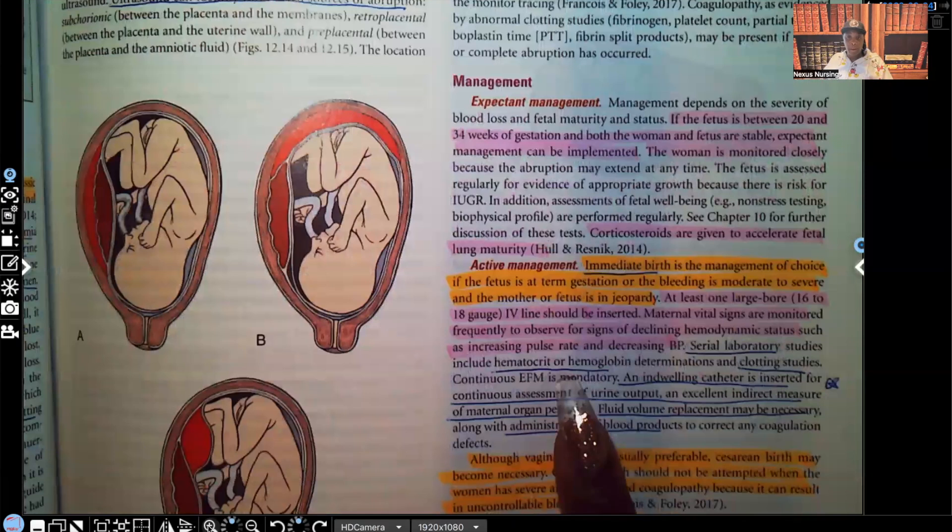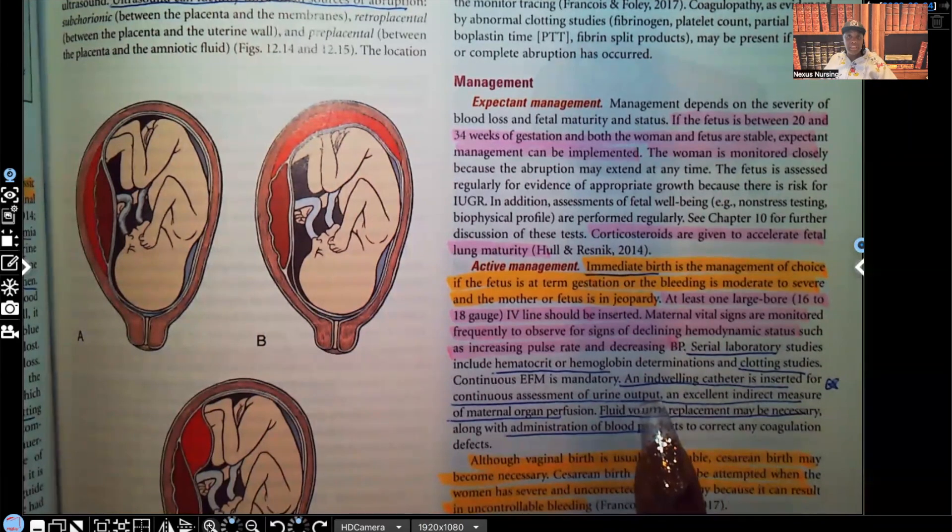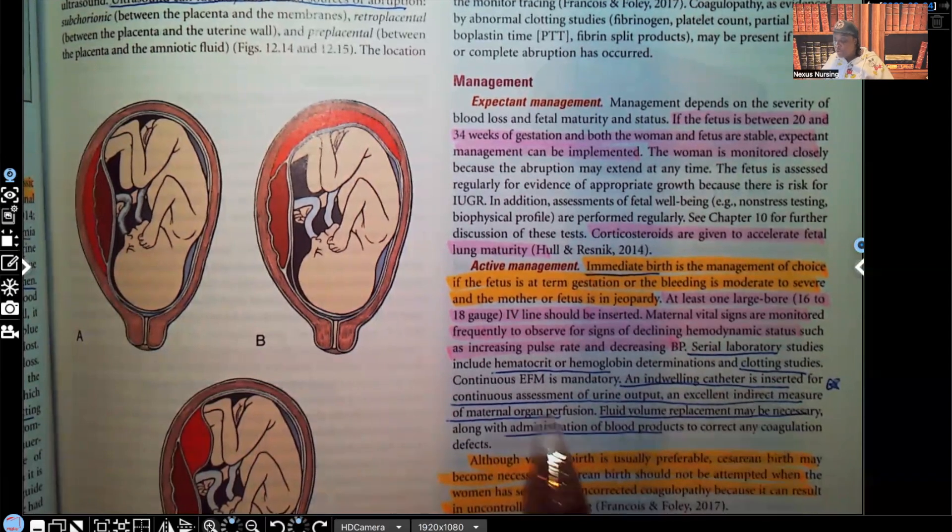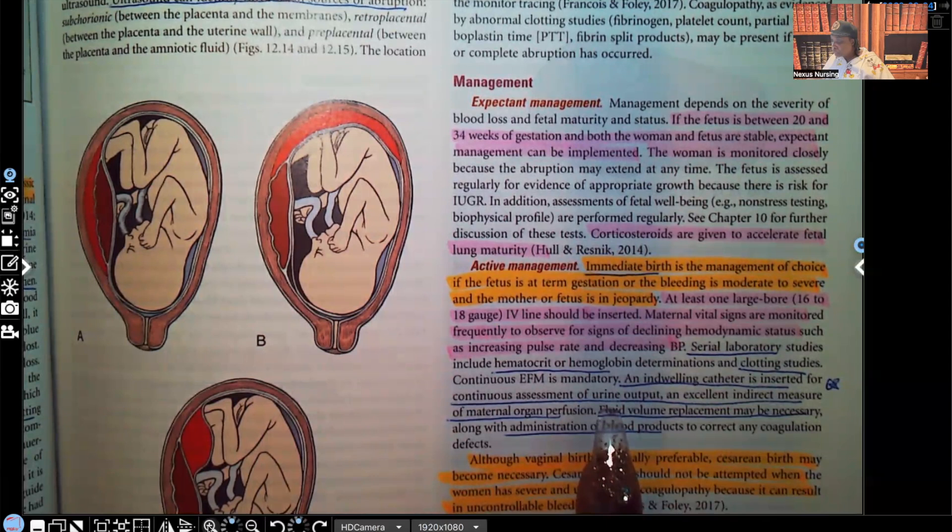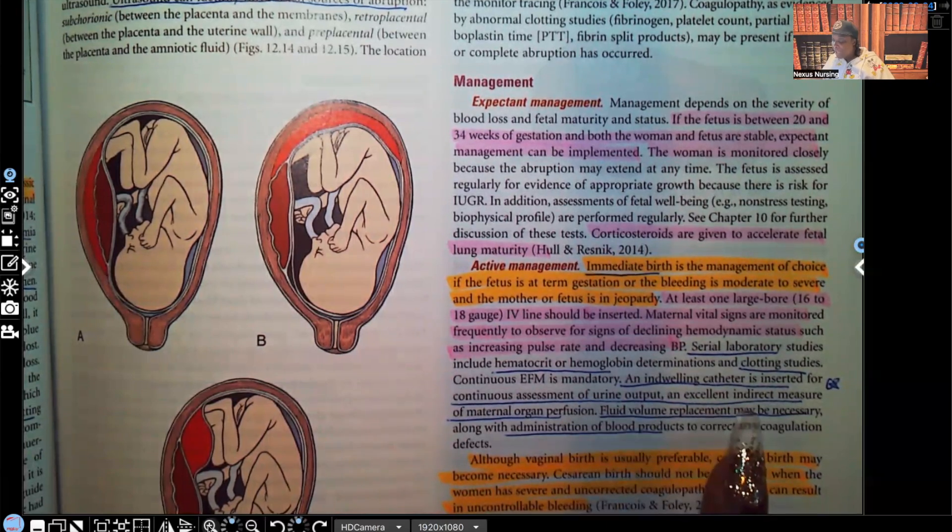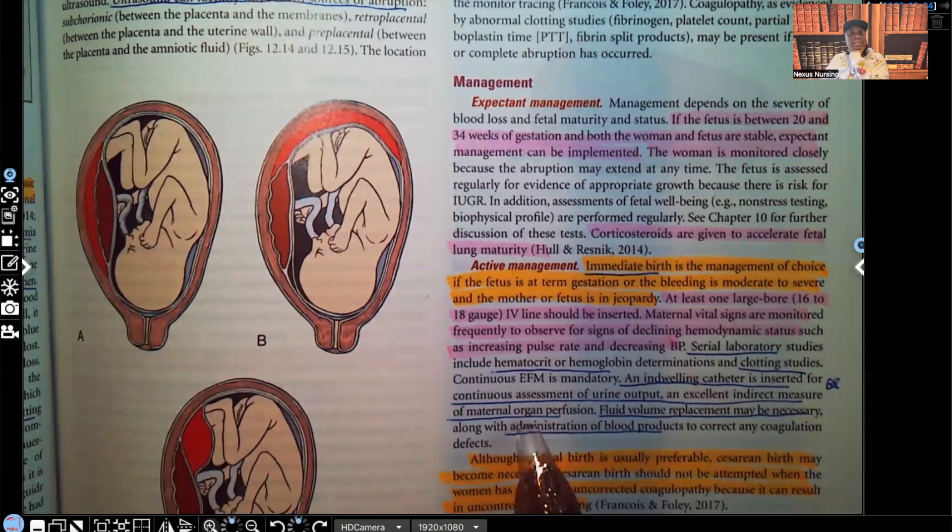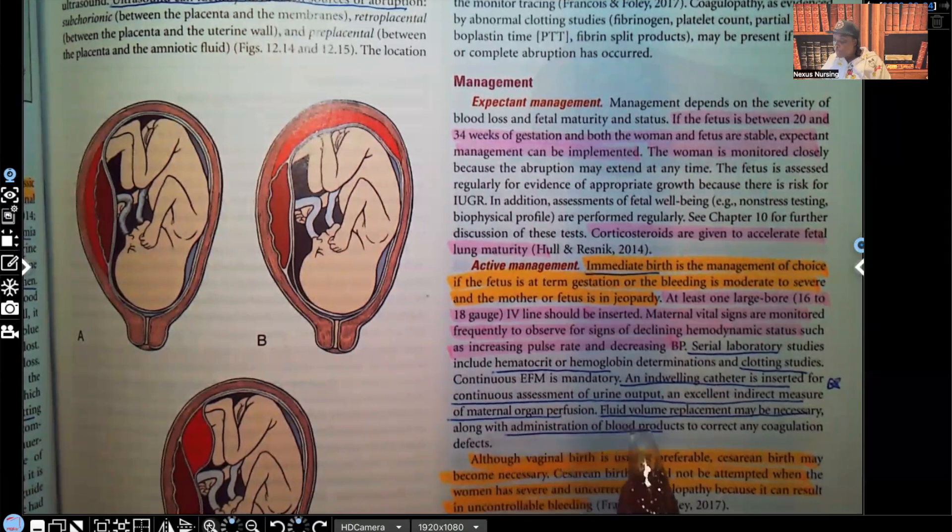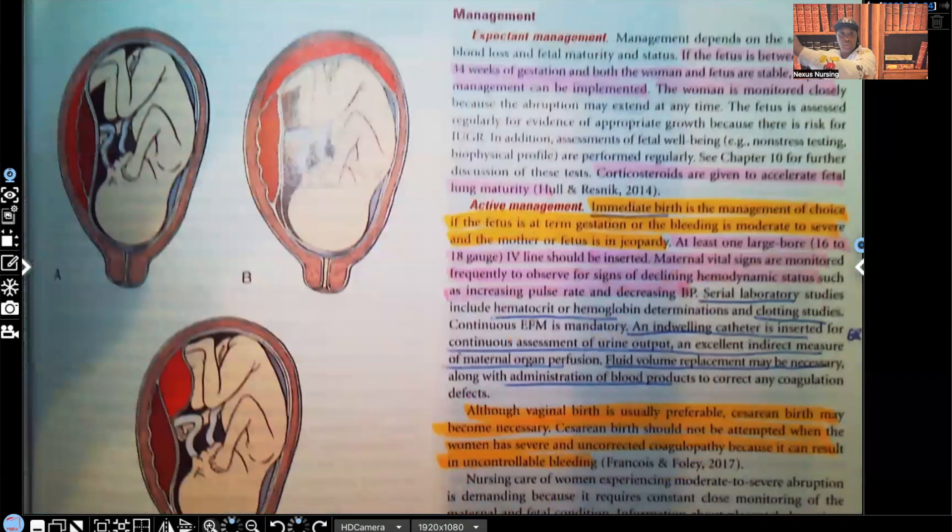Serial lab studies, you're going to be looking at the H&H. You want to make sure it doesn't start dropping. You're going to be looking at the clotting studies because one of the problems is clotting defects and hemorrhage. Indwelling catheter is going to be inserted for continuous assessment of urine output. When the patient is hemorrhaging, they're bleeding out, the first things that happen is the kidneys start to shut down. So we really need to be looking at that urine output. This is an excellent indirect measure of maternal organ perfusion. Because when those organs are not being perfused, the body's going to try to save itself. And the first organ to shut down is going to be the kidneys. Fluid volume replacement may be necessary. Administration of blood products may be necessary as well.